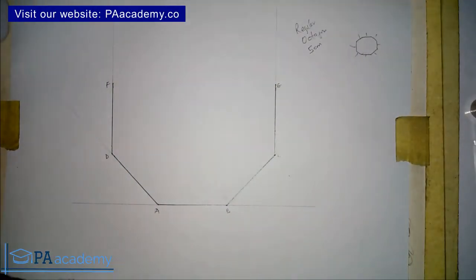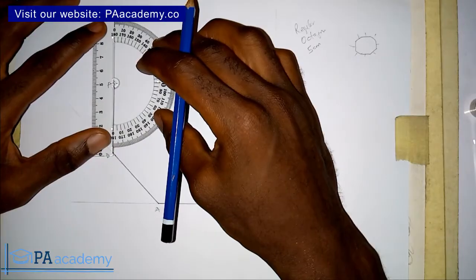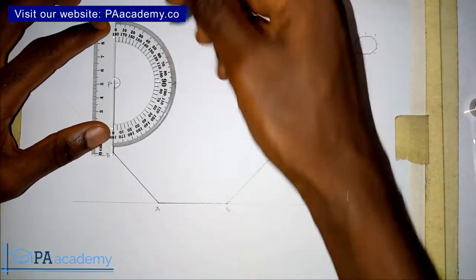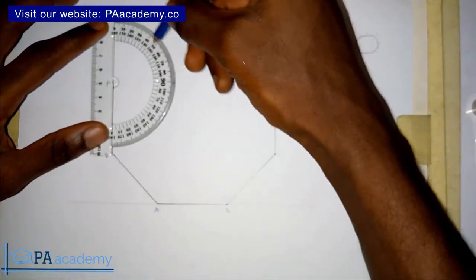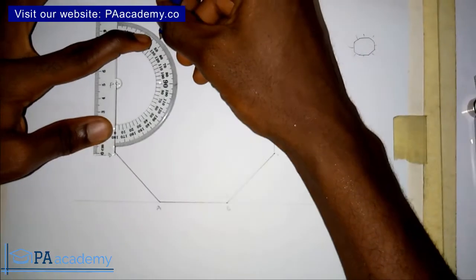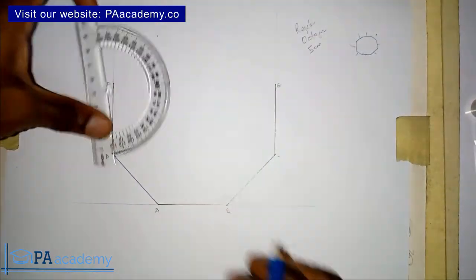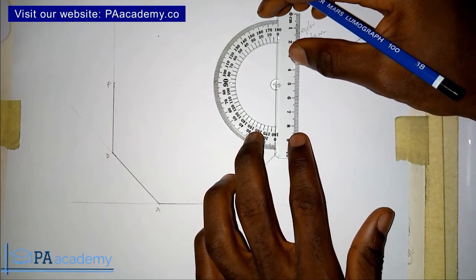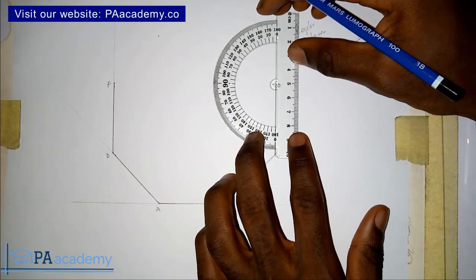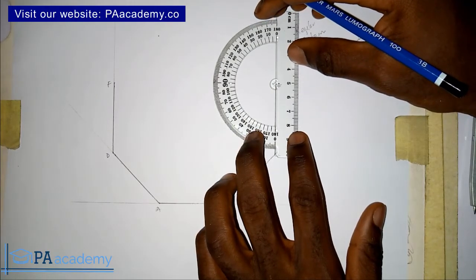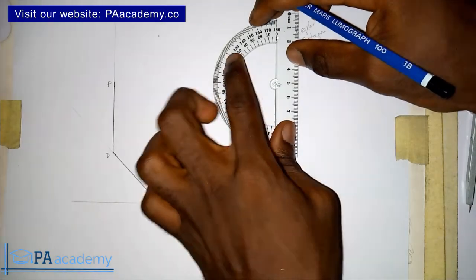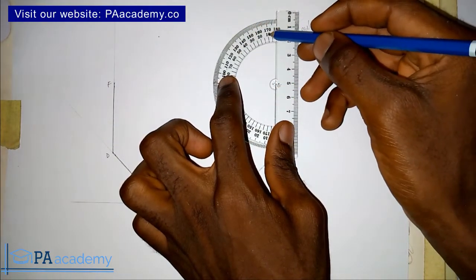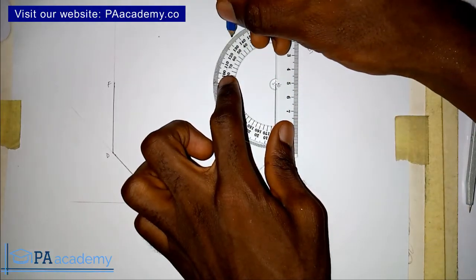We'll bring back our protractor. Place it on point F — make sure it is properly placed — and measure 45 degrees in this direction. Then place it on point E. Looking in this direction: 0, 10, 20, 30, 40, 50 — in between this is the 45-degree mark.